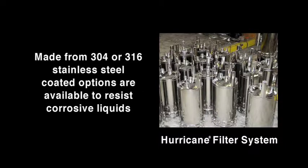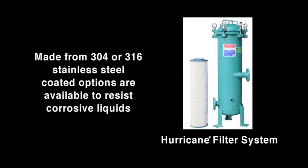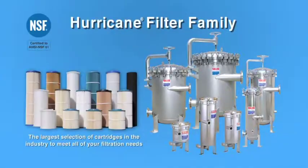The Hurricane housings are made of electropolished 304 or 316 stainless steel and can be coated to resist seawater or corrosive compounds. They come in a variety of sizes with an array of filter cartridge options to meet virtually any filter application.